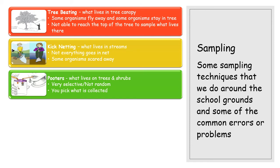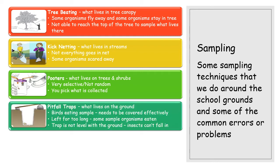Pooters are good for sampling things from trees and shrubs at your normal height, but they are unfortunately very selective. It has a two-way straw mechanism: you suck on one straw, which sucks an organism off a leaf and into the jar. There is a bit of mesh to stop anything going from the jar into your mouth, but you go along and specifically choose organisms, making it less random than tree beating.